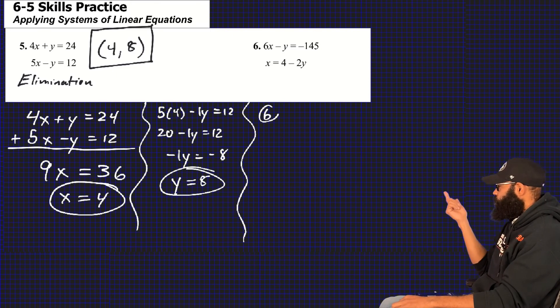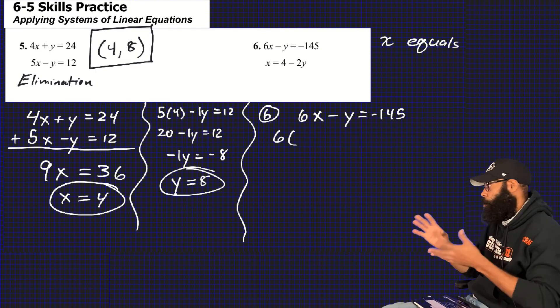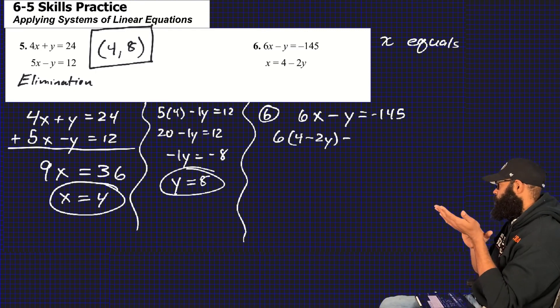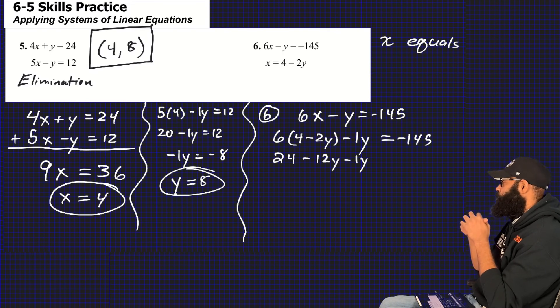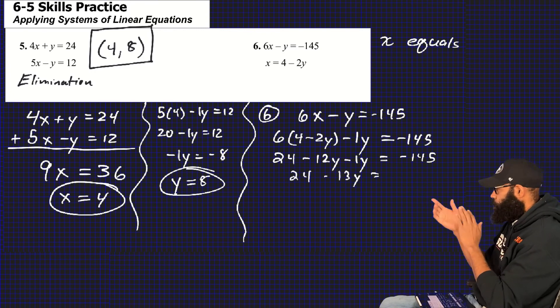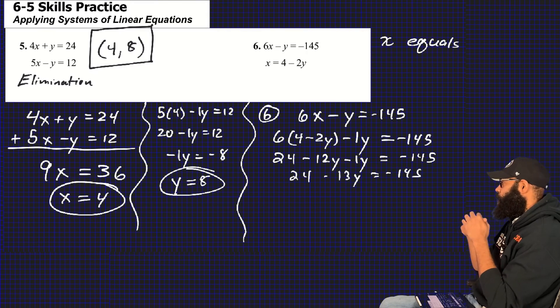Now if you look at 6, when you read the second equation, top equation is 6x minus y equals negative 145. The second equation says x equals. The minute it says x equals, the minute your brain, my brain says substitution method. I'm going to write substitution method. x equals 4 minus 2y. So 6 times (4 minus 2y), parentheses close, minus the 1y. Distributive property: 6 times 4 give me 24, 6 times 2y give me negative 12y, and of course the negative 1y came down.